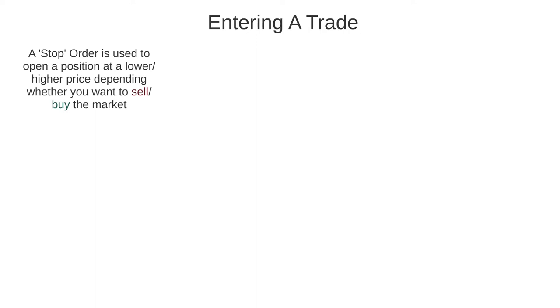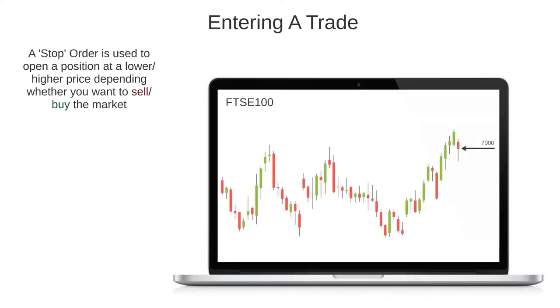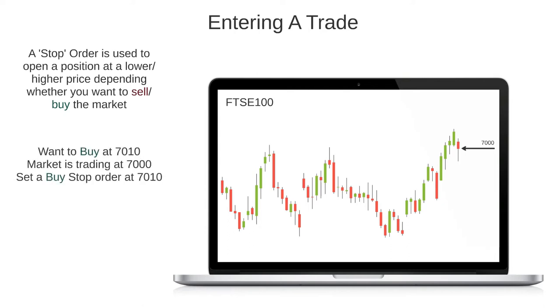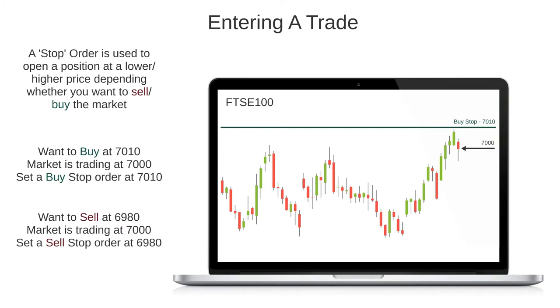The other order you can use to enter a trade is a stop order. Stop orders work in the opposite way to limit orders in that they allow you to open a buy position at a higher price than the current market price and a sell position at a lower price than the current market price. For example, if I thought that the FTSE 100 would make a significant move upwards if it reached 7,010 and it was currently trading at 7,000, I could set a buy stop order at 7,010 and I would be automatically entered into a buy position when the market reaches that price. On the flip side, if I thought the market would make a significant move down if it fell to 6,980 and it was trading at 7,000, I could set a sell stop order at 6,980 and I would be automatically entered into a sell position when the price falls to 6,980.